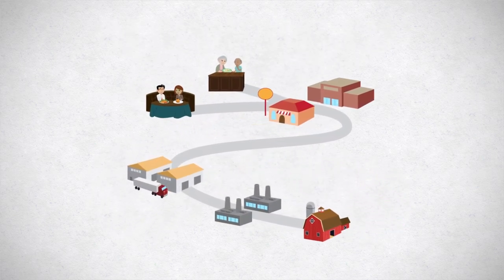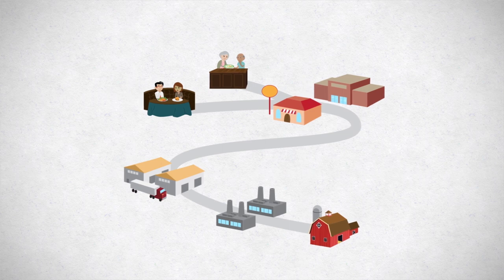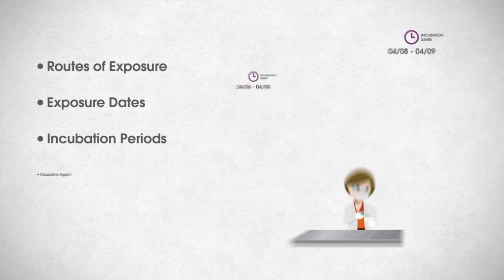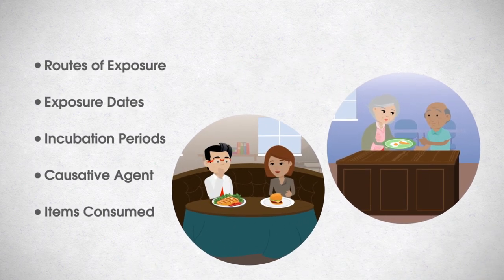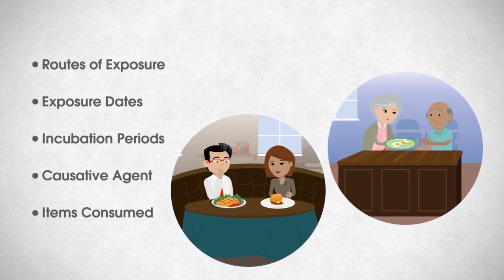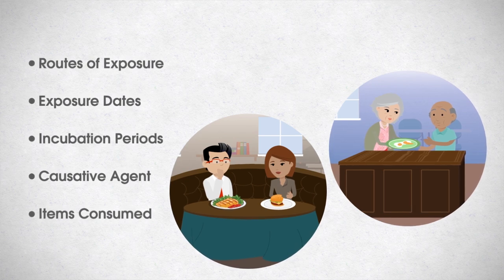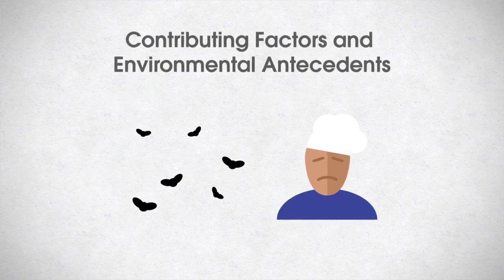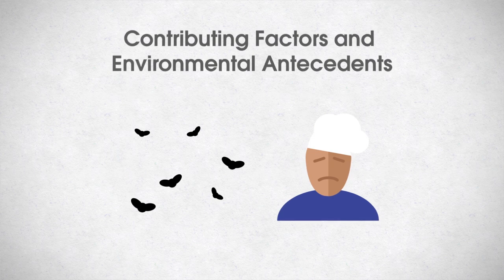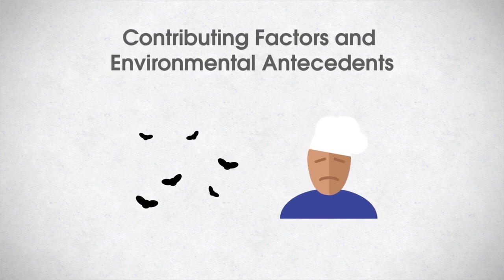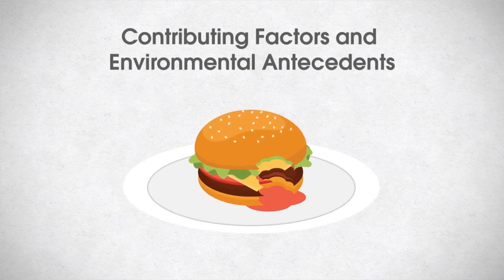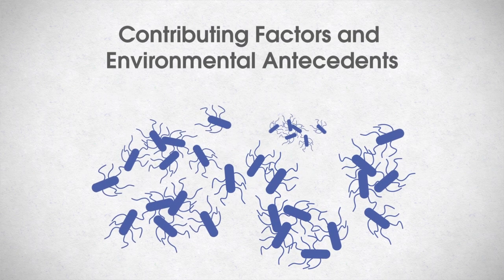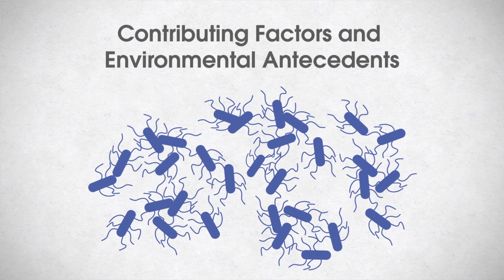In preparation for an environmental assessment, an environmental health professional must become familiar with the available outbreak information, such as routes of exposure, exposure dates, incubation periods, the causative agent, and food items consumed. They must understand how the causative agent can be transmitted in order to identify potential food vehicles and routes of transmission. Contributing factors are elements that increase the risk of foodborne illness and repeatedly contribute to outbreaks. The three major categories of contributing factors include contamination, survival, and proliferation. The identification and correction of these factors facilitates prevention and control of foodborne diseases.